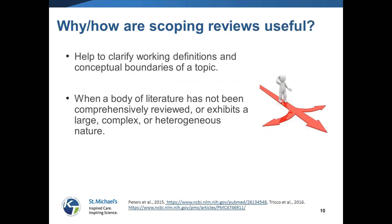In our work with knowledge users, we've been told that the scoping review is useful because it helps with working definitions as well as conceptual boundaries of a topic. It's particularly helpful when it's an emerging literature or an emerging field, perhaps one that hasn't been comprehensively reviewed, or perhaps the topic is very large, complex, or heterogeneous. This really helps knowledge users quickly understand what the literature base looks like.